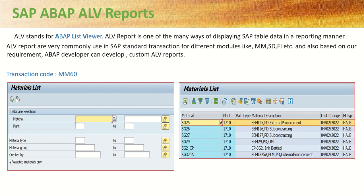In SAP, whenever we are processing any transaction — like creating a material master, creating a purchasing document, sales order, or processing any finance transaction, or doing any data collection — all that data gets stored in different SAP tables. But for reporting purposes or data analysis, we require the data to be presented in the form of a report, for which we can make use of ALV reports.